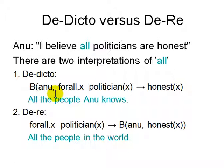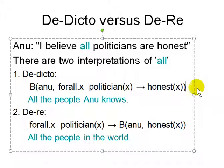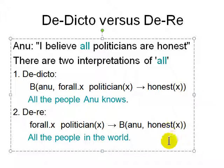And there are two different things about it — De dicto versus De re. These are Latin words you can look up on Wikipedia. Anu says 'I believe all politicians are honest.' There are two interpretations. De dicto: Anu believes that for all X, politician(X) implies honest(X) — about all the people Anu knows. De re: independent of all the people Anu knows — for all people in the world who are politicians, Anu believes X is honest. There is a slight difference between De dicto and De re.